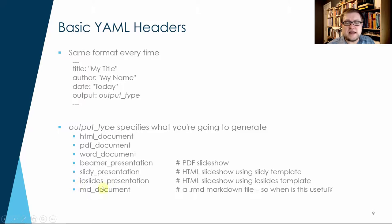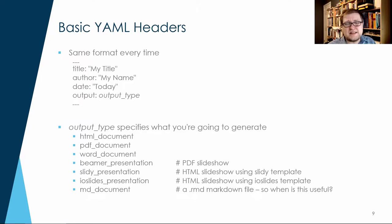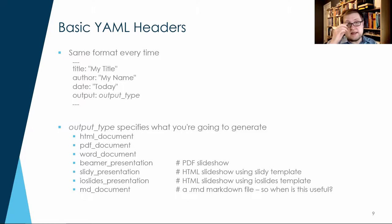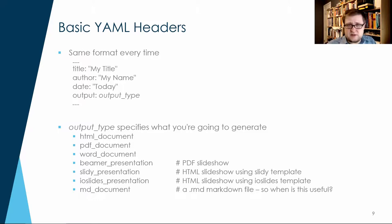There's also an output type called 'md_document,' which allows you to output a new Markdown file based on your first Markdown file — useful if you're creating templates for other people or standard Markdown workflows to pass on to others. YAML is a little unusual in that indentation and tabs matter — unlike R, YAML does care if you add extra spaces, which can cause confusion. HTML is the most flexible output format and comes with a lot of additional options. There's a reference guide from RStudio — click that link for more detail.